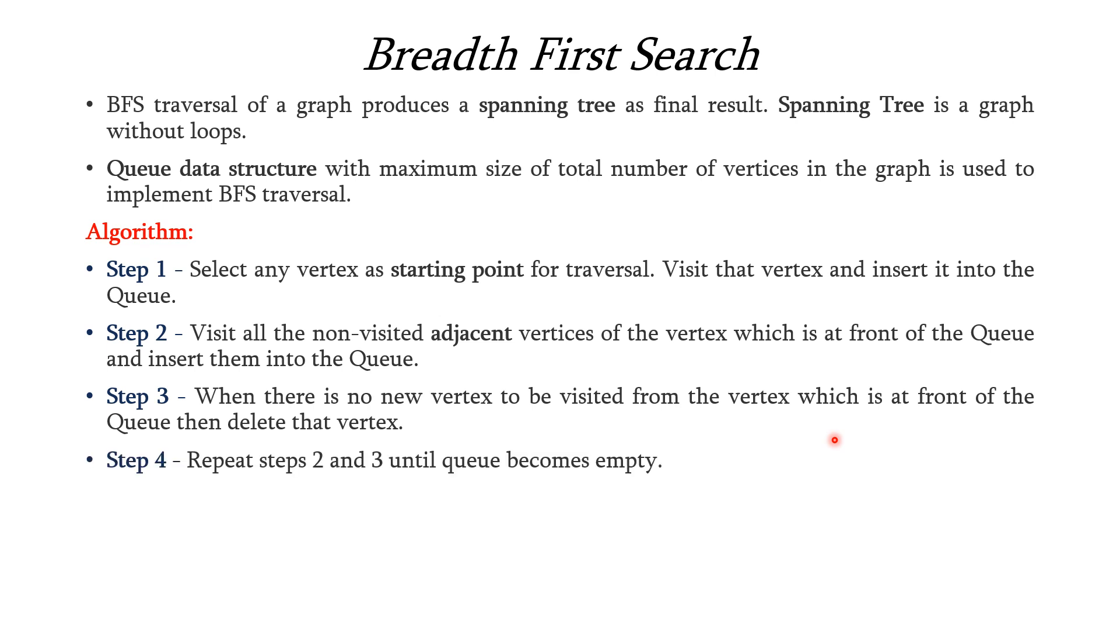We have to repeat these steps 2 and 3 until the queue becomes empty and once the queue becomes empty we get the final spanning tree by removing all unused edges from the graph. Now let us see the BFS traversal with an example.